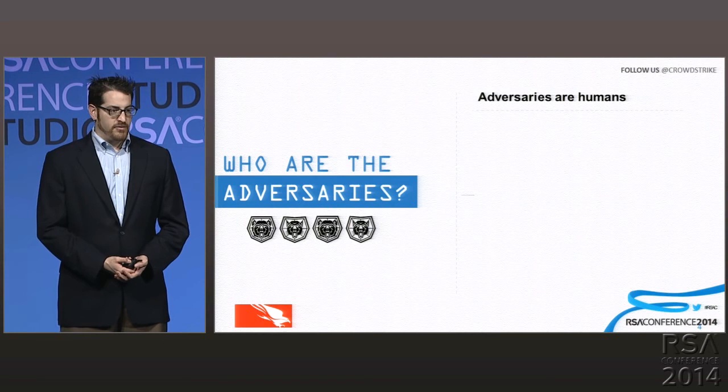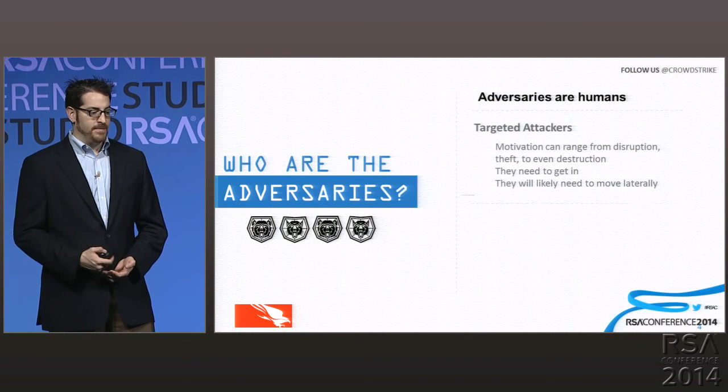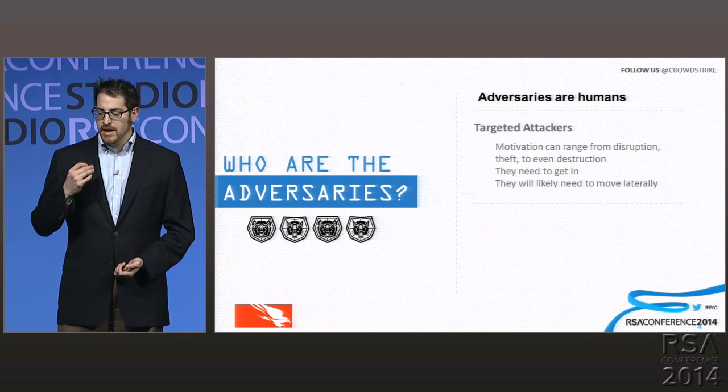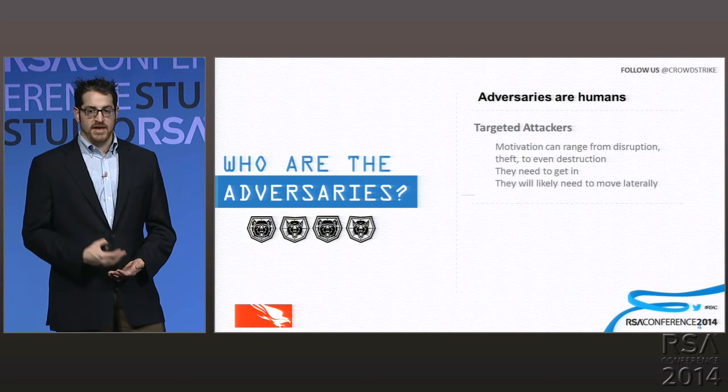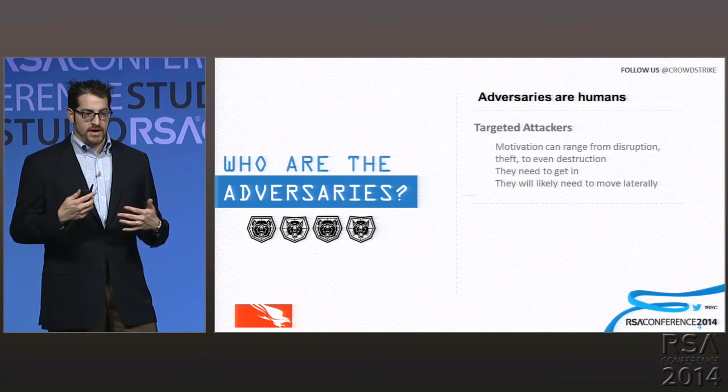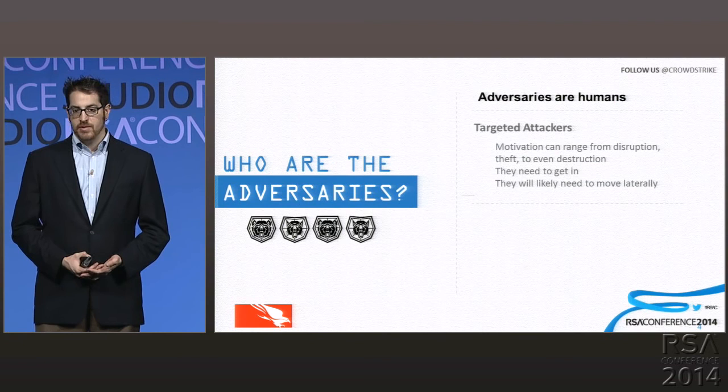So who are these adversaries? You may have seen that we've talked about a couple of them publicly, things like Energetic Bear and Anchor Panda. But at the core, adversaries are humans. It doesn't matter if you're dealing with Zeus or a Citadel-type infection — there is some human that built that malware, that set up that infrastructure, that put together all of the components needed to make that a successful attack.